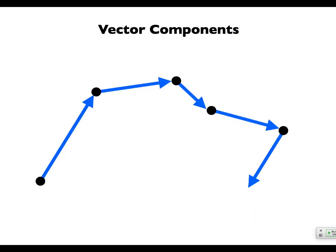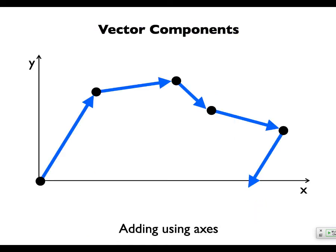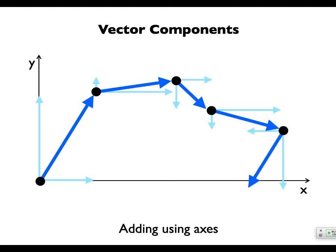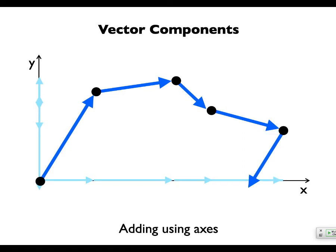If you wanted to do this and actually get a number, you could break all of these into x and y components. Once vectors are parallel, you can add them like numbers — three plus two gives you five only if they're parallel. As long as your vectors are along the same axis, you can use regular addition and subtraction. You can move all components onto the axis, add them up, and that's super convenient.